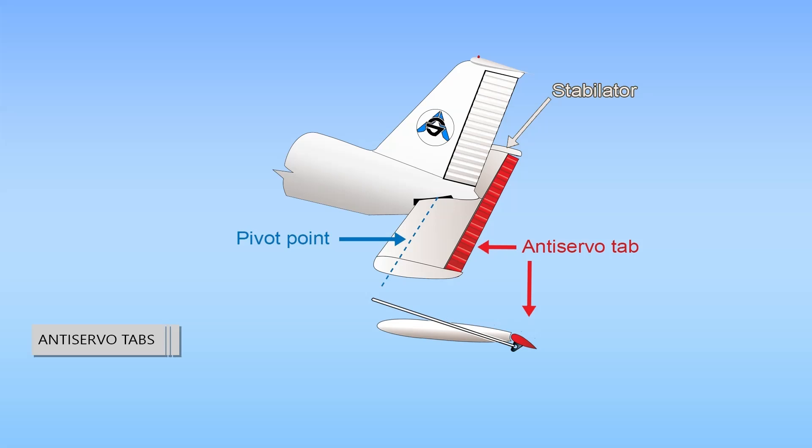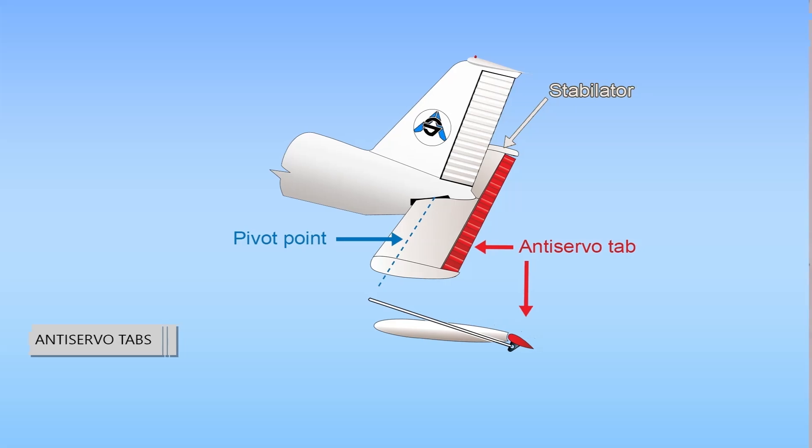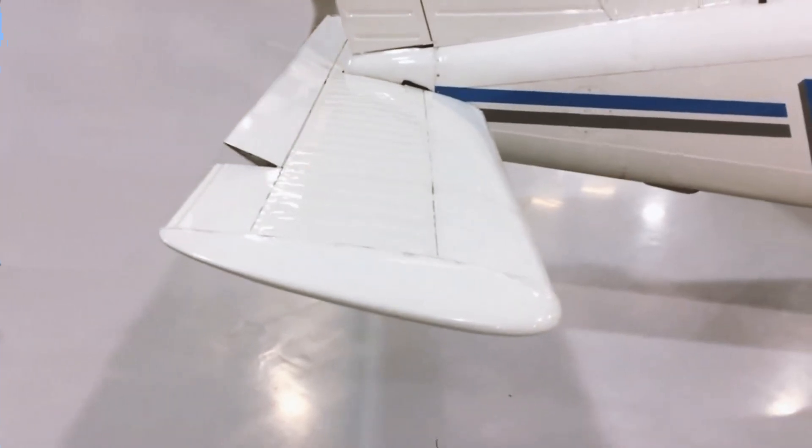The fixed end of the linkage is on the opposite side of the surface from the horn on the tab. When the trailing edge of the stabilator moves up, the linkage forces the trailing edge of the tab up. When the stabilator moves down, the tab also moves down. Conversely, trim tabs on elevators move opposite of the control surface.